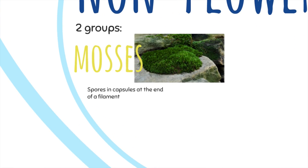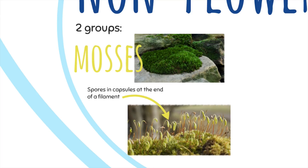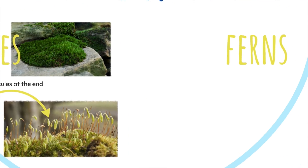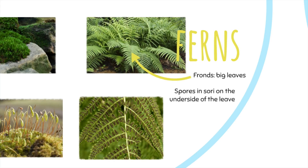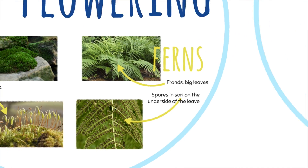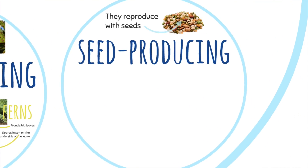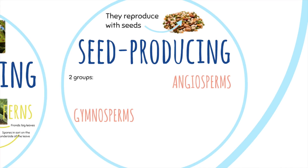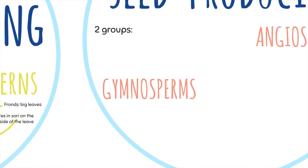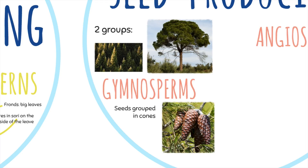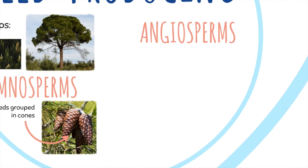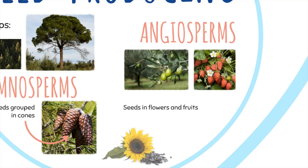Mosses are very tiny plants with their spores in capsules at the end of a filament. Ferns are much bigger and their leaves are called fronds; their spores are in black dots on the underside of the leaf. Seed-producing plants reproduce with seeds. There are two groups: gymnosperms, which produce seeds grouped in cones, and angiosperms, which have their seeds in fruits or flowers.